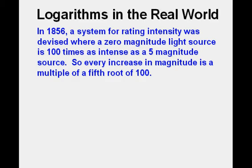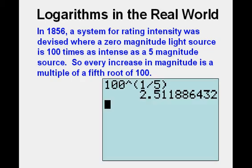So every increase in magnitude is a multiple of a fifth root of 100. And here we see that every increase of 1 in magnitude is really about a 2.5 factor of increase in brightness.